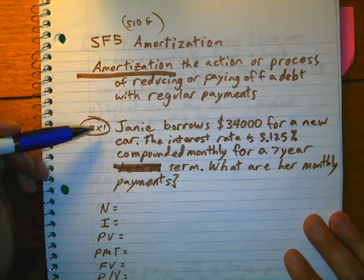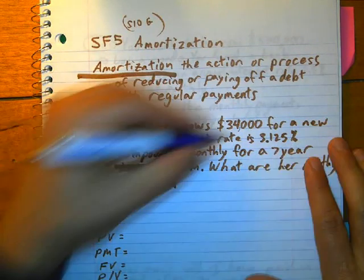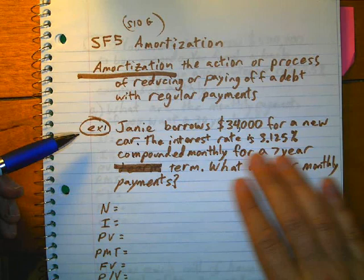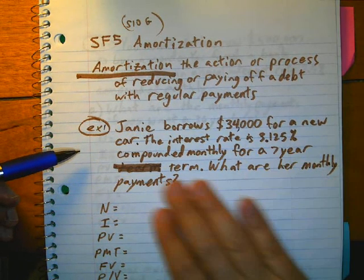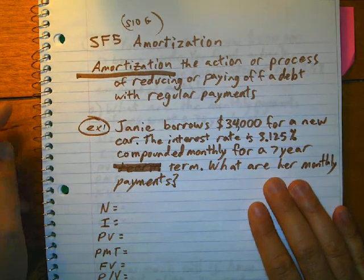So either getting a loan or buying a house, you're using amortization. Let's look at this example. Jane borrows $34,000 to buy a new car. The interest rate is 3.125% compounded monthly for a seven-year term. What is the monthly payment going to be?